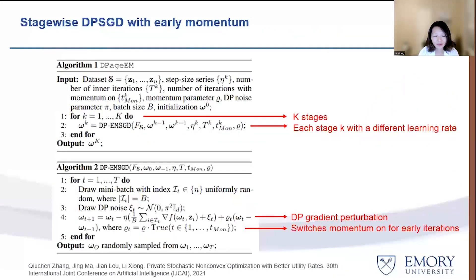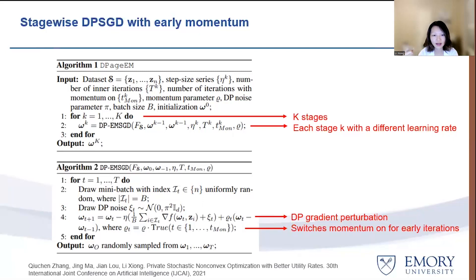Here's the algorithm. It uses a multi-stage framework in the outer loop with K stages, each using a different learning rate. In the inner loop corresponding to each stage, it uses a differential privacy gradient perturbation to perturb the gradient before doing the model updates for each iteration. The algorithm is fairly simple — it just adds a gradient perturbation step into the standard multi-stage SGD algorithm — but all the tough mathematical work is in the privacy and utility analysis.